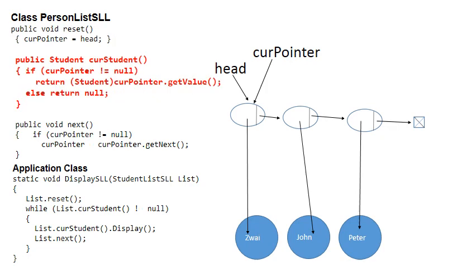Then we have the method called currentStudent. In broad terms, currentStudent returns the student that is linked to the node pointed to by currentPointer. So in this scenario, currentPointer is pointing to head, so currentStudent will return student Zwei. Notice that if currentPointer is null, then currentStudent will also return null — but it will always return the student linked to currentPointer.